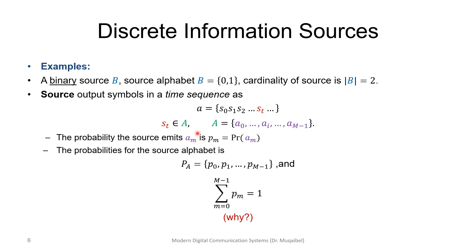The probability that the source emits symbol a_m is p_m, which is the given probability of that symbol. With M symbols we assign a probability to each one. The sum of all these probabilities must equal one, because we must select one of the symbols.